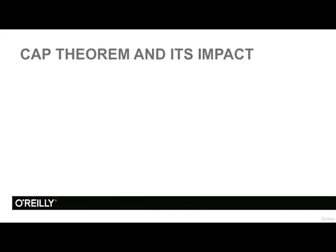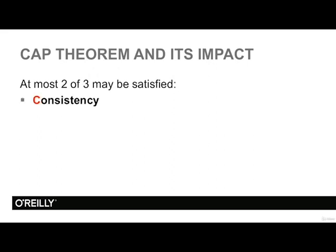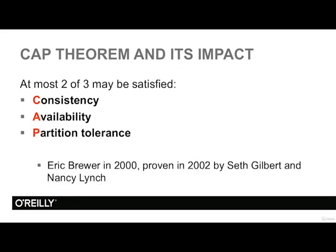Many of these systems run in a distributed environment, and there is something called the CAP theorem that describes the behavior of such systems. The CAP theorem states that at most two of the following three properties may be satisfied: consistency, availability, and partition tolerance. This theorem was established in 2000 and proven in 2002.